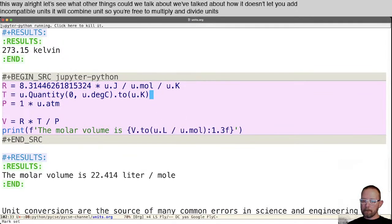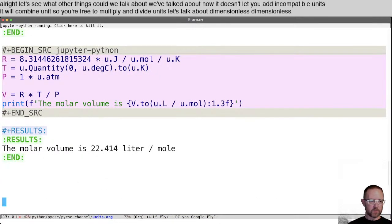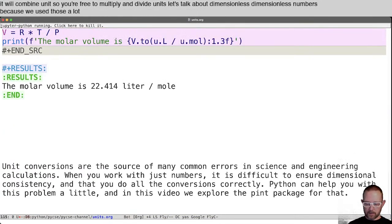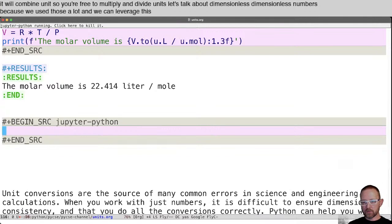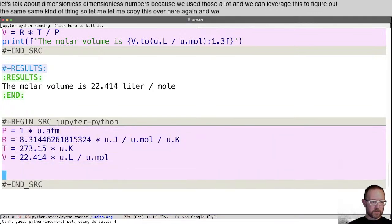Let's talk about dimensionless dimensionless numbers, because we use those a lot and we can leverage this to figure out the same same kind of thing. So let me copy this over here again. And we have from the pressure, the gas constant, the temperature, this is the molar volume.